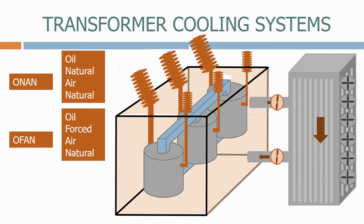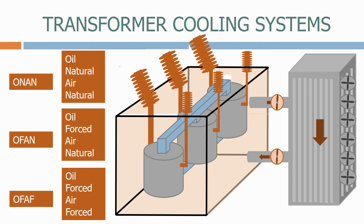Next we have OFAN, which is oil forced, air natural. In this scenario, pumps are operated on the pipes connecting the transformer tank to the cooler bank, and therefore the oil circulates more quickly through the cooler bank and cools down quicker. In addition to the oil being pumped through the cooler bank, we can also have additional fans on the cooler bank which cool down the oil even quicker.